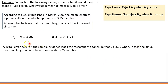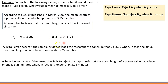What is a Type 2 error? Type 2 error is when we do not reject H0 when in reality the alternative hypothesis is true. A Type 2 error occurs if the researcher fails to reject the hypothesis that the mean length is 3.25 minutes, when in fact it is longer than 3.25 minutes.